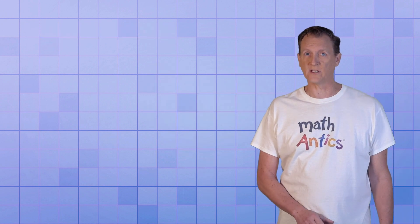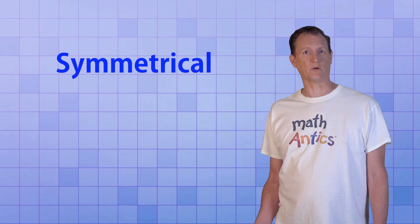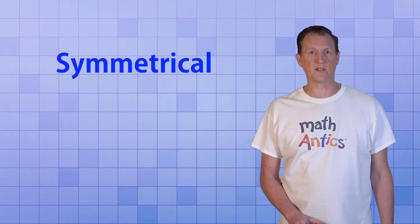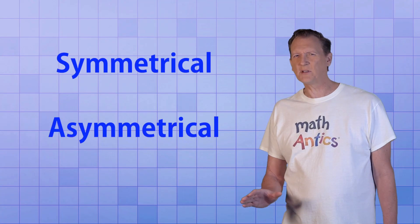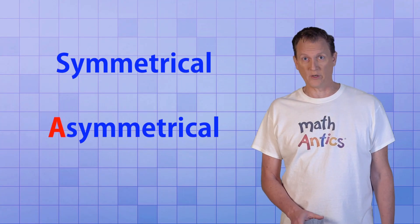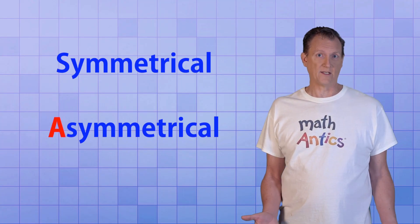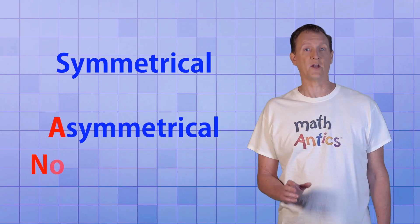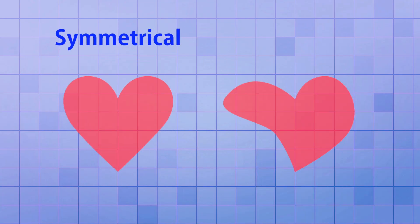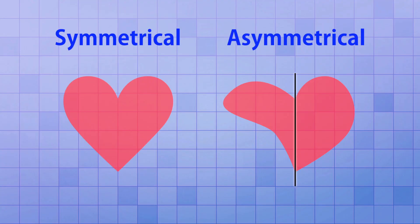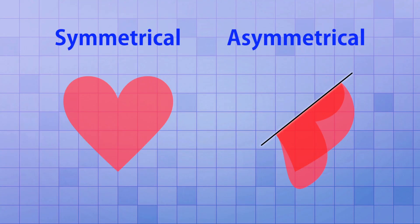An image that has symmetry is called symmetrical, and an image that doesn't have symmetry is called asymmetrical. Sometimes putting the letter A on the beginning of a word means 'not,' so asymmetrical just means not symmetrical. See how when we fold this asymmetrical image, the halves don't match? And there's no way we could fold it where the halves would match.